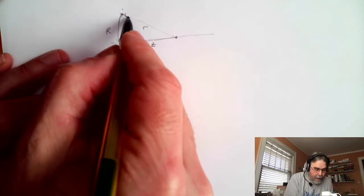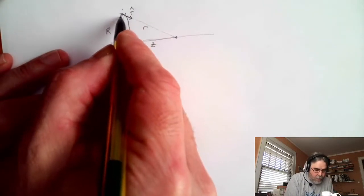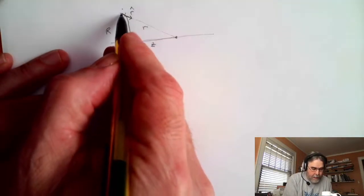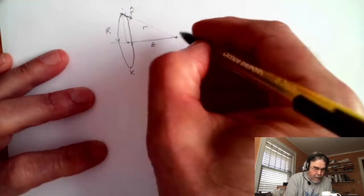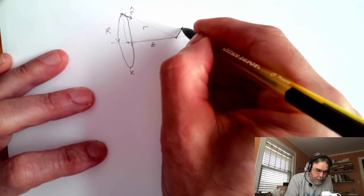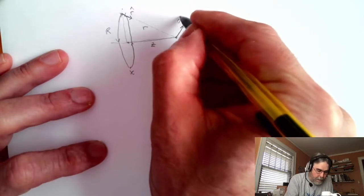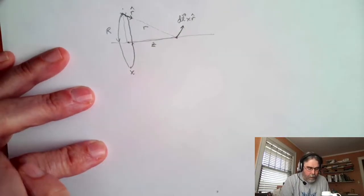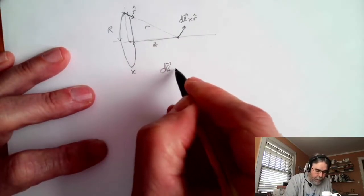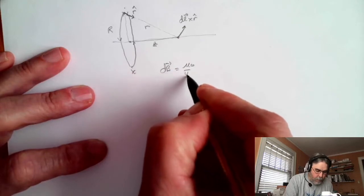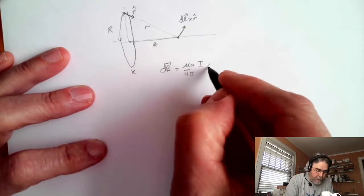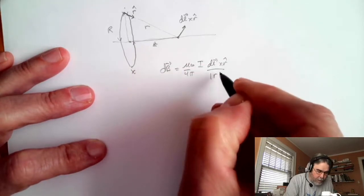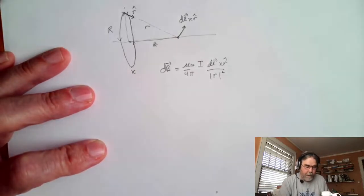Now, r-hat is going to point along the direction between the chunk of current and the point where the magnetic field is being produced. And dl points out of the page; dl cross r-hat is going to point this way. We know that the magnetic field produced by that little element is going to be mu_0 over 4π times the current times dl crossed into r-hat divided by the magnitude of the r vector squared. That's the Biot-Savart law.